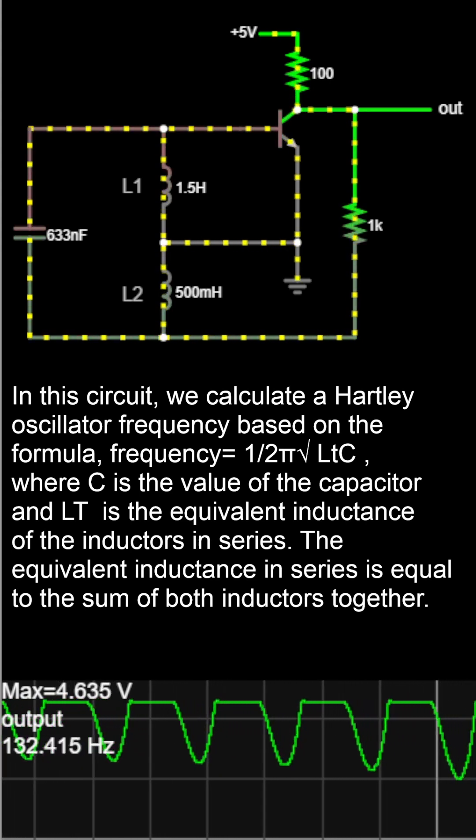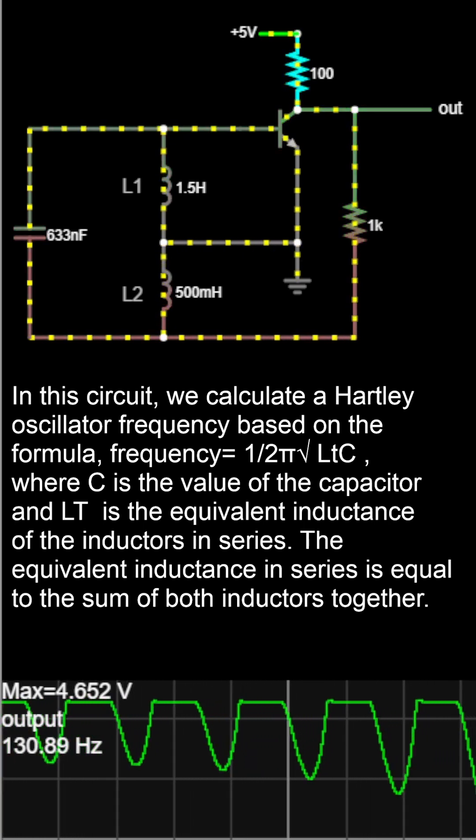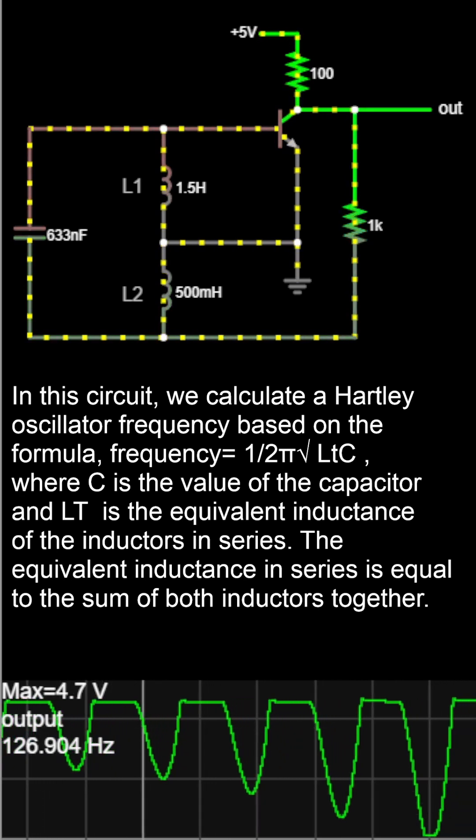The transistor cannot conduct until its base is at about 680 millivolts. When the transistor is off, the output is around 4.7 volts. Current from the 1k resistor gets a current going to ground through inductor 2.